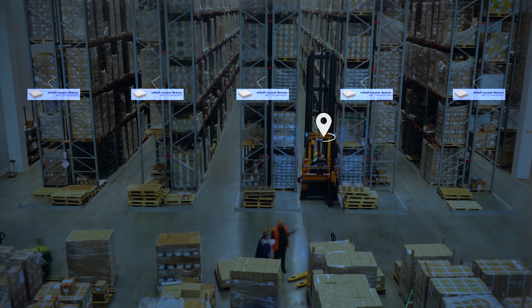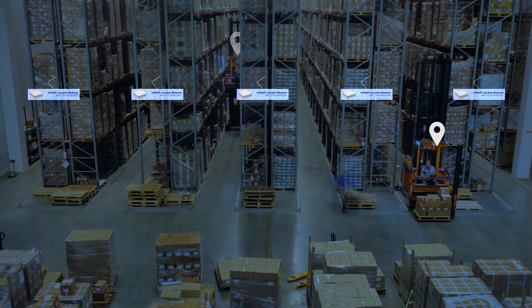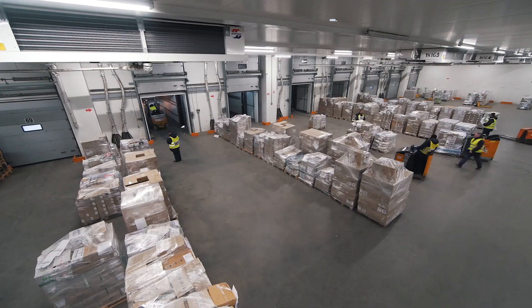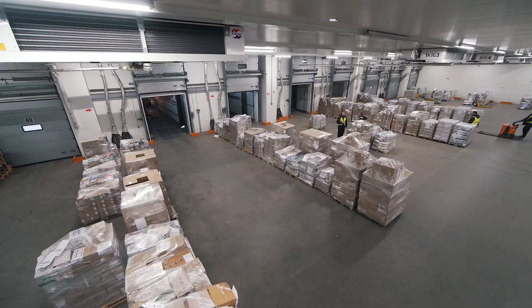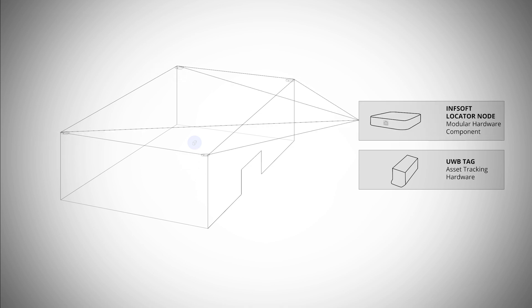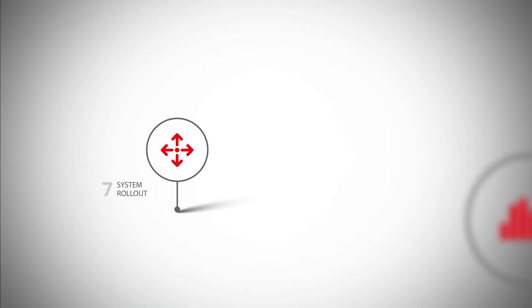Step 6: Calibration. The position of the locator nodes and locator beacons is set in the back-end. Locator beacons enable time-delayed tracking and are used whenever small latencies are not an issue. Locator nodes, equipped with ultra-wideband, offer further self-positioning capabilities in open spaces.